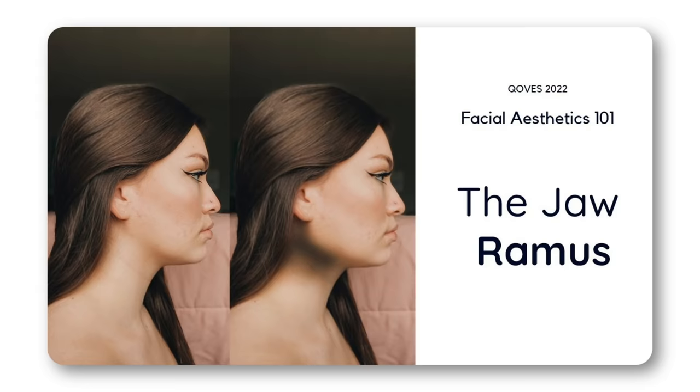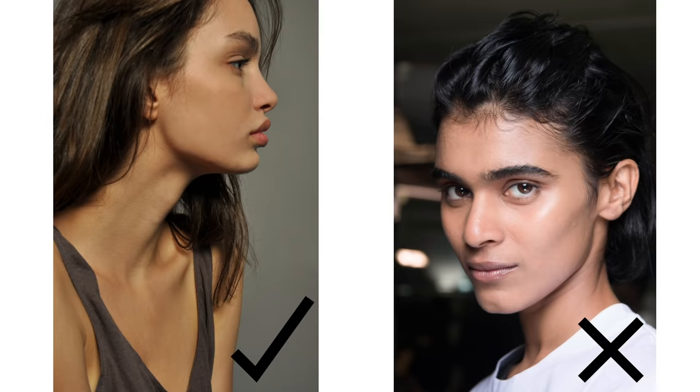Even the jaw muscles gain size depending on the gonial angle — the lower the angle, the more work the masseter muscles do and grow. If this sounds confusing, go back to the Ramus 101 video for a more visual explanation. To accurately measure this angle, the individual should be facing completely to the side, because even a slight turn makes the angle appear higher than it actually is. So we need a full-on side view of your profile.